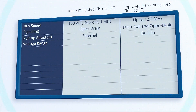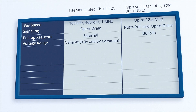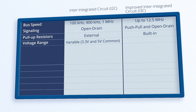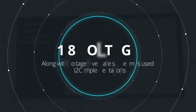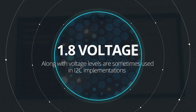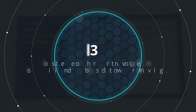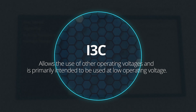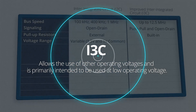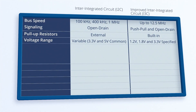Another difference between the protocols is the operating voltage. i2C can be used across a wide operating range; although 3.3V and 5V operation are the most common, 1.8V and other voltage levels are sometimes used. While i3C allows the use of other operating voltages, it is primarily intended to be used at low operating voltages. The specification targets 1.2V, 1.8V, and 3.3V operation.